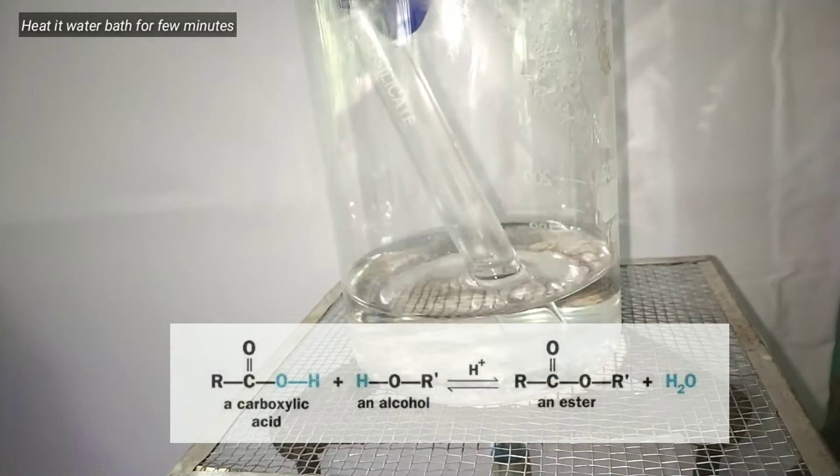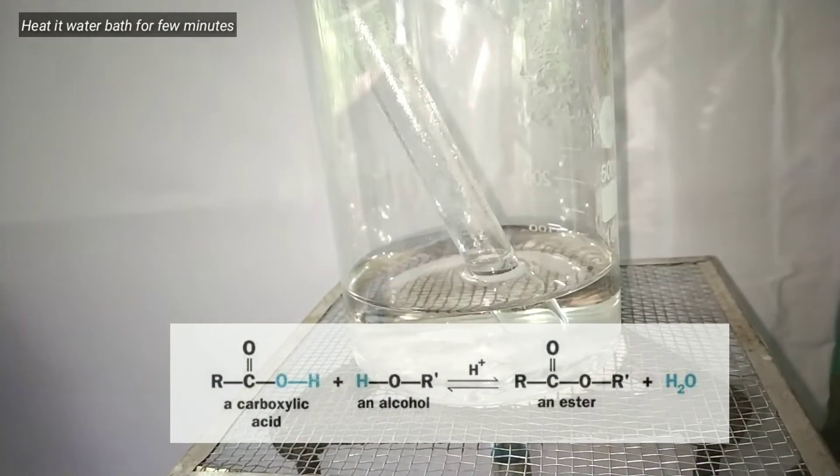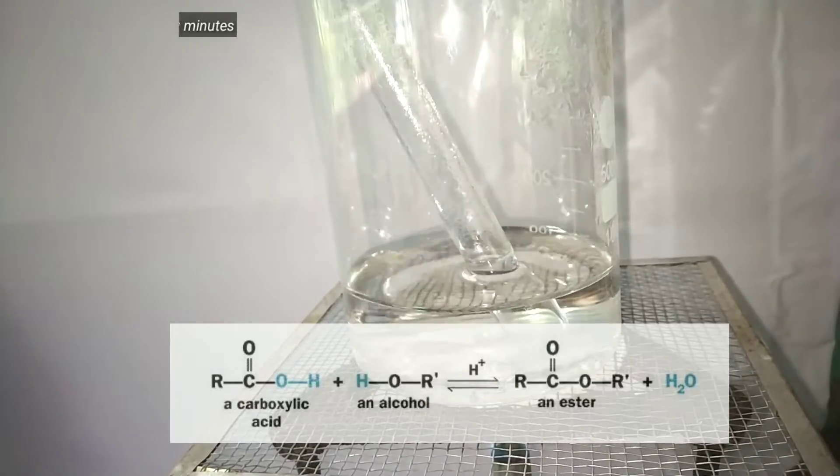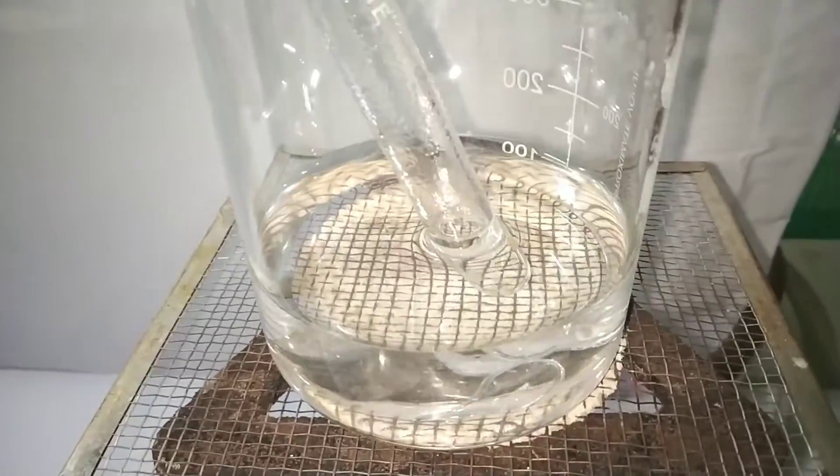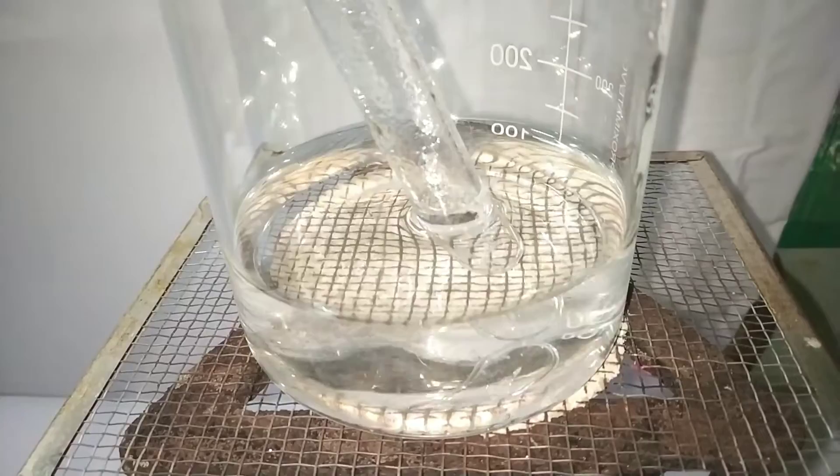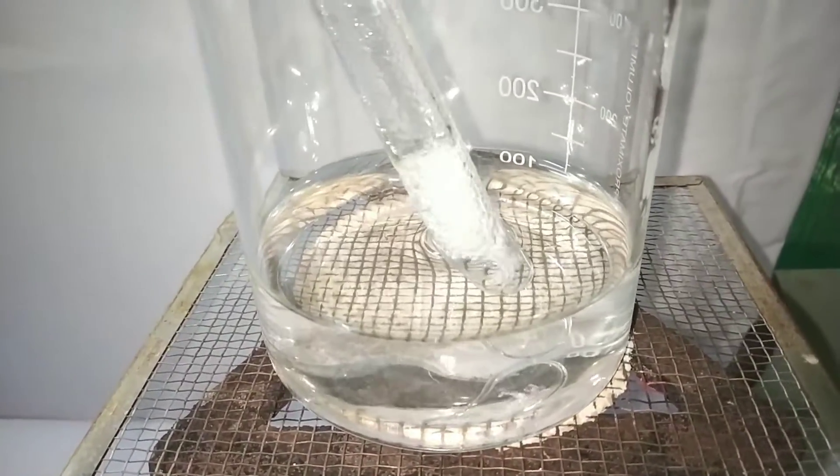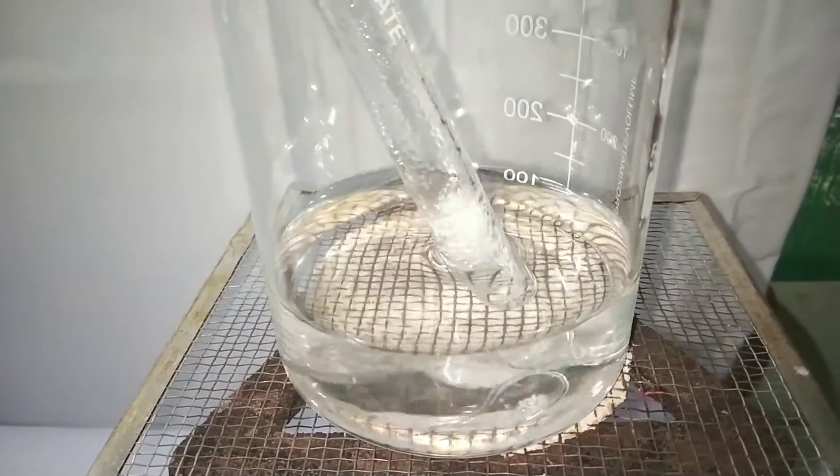Now we place the test tube in a hot water bath for a few minutes. What's happening here is carboxylic acid reacts with alcohol in acidic medium to produce fruity-smelling compounds called esters.